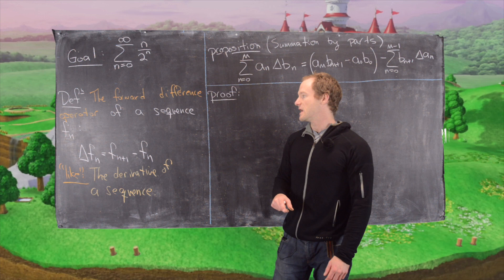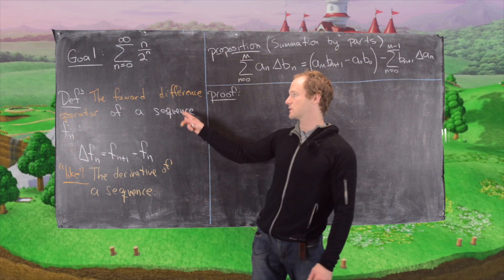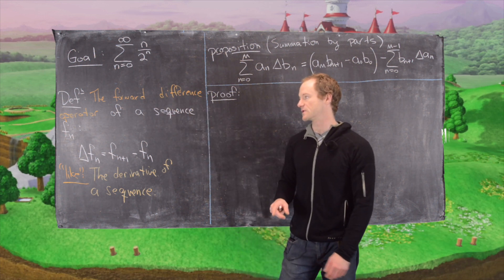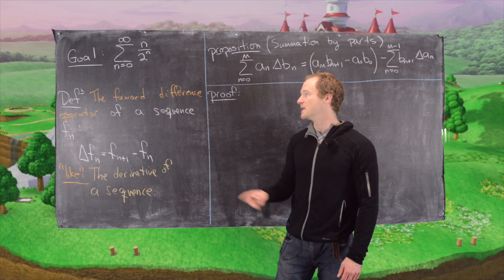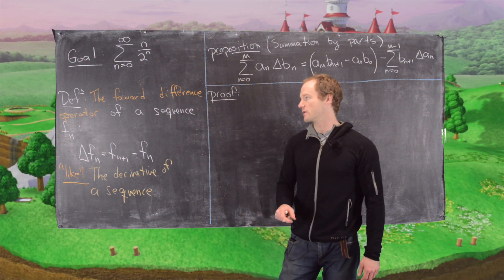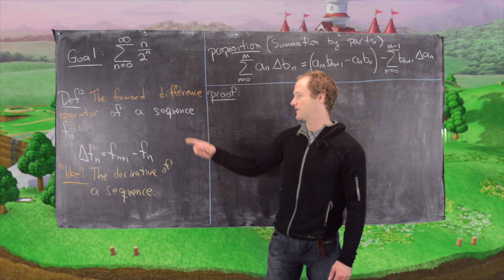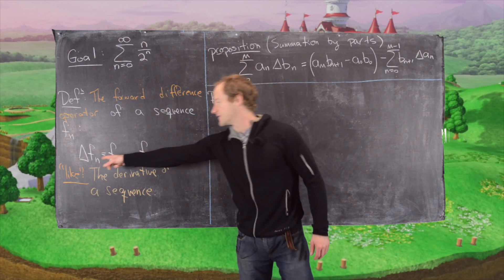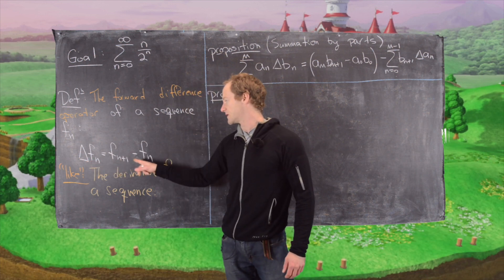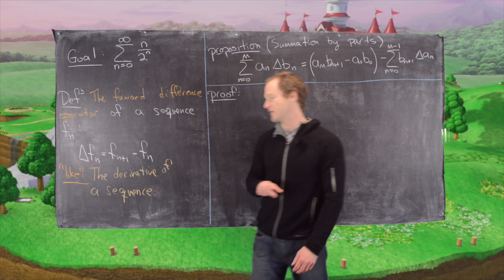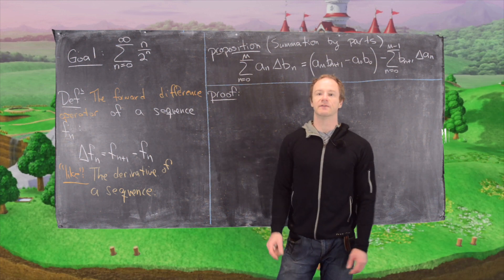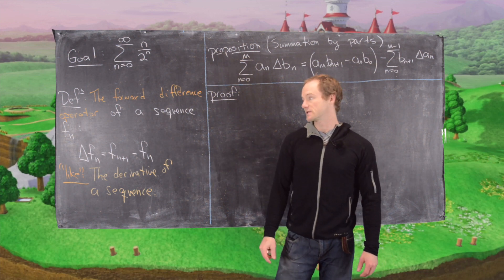We're going to make use of a couple of tools. The first one is this thing called the forward difference operator. It's defined as follows: the forward difference operator of a sequence fₙ, written delta fₙ, is fₙ₊₁ minus fₙ. You can think of this as like the derivative of a sequence.